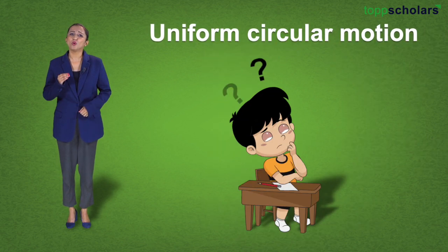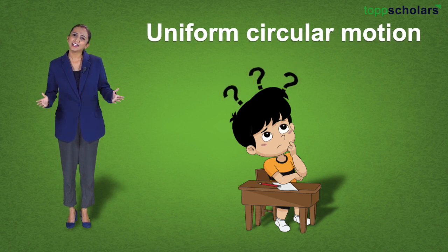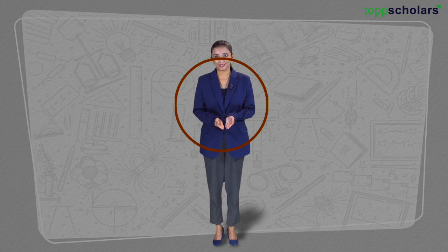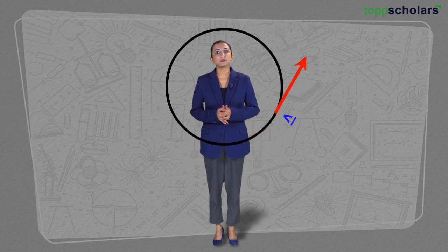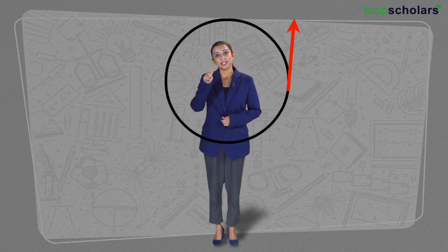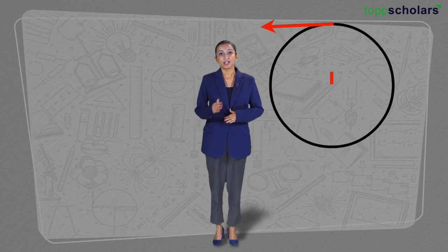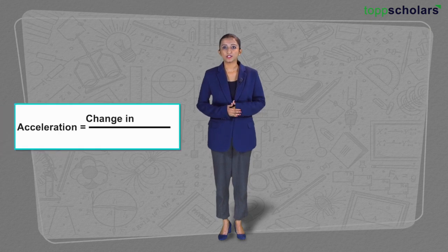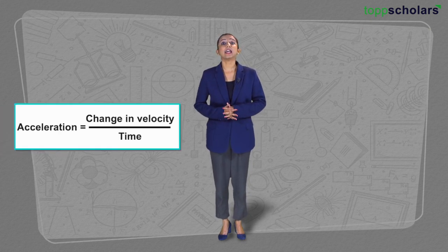Uniform circular motion is one of the most misunderstood concepts in physics. Let's understand what it is. Circular motion happens when a particle traces a circular path. What is strange about this is that velocity keeps changing even when the speed remains the same. This is because velocity has both magnitude and direction. Even while the magnitude remains the same, the direction of the particle keeps changing — it is always perpendicular to its path. Since the velocity keeps changing continuously, it is an accelerated motion.